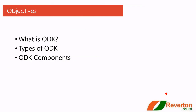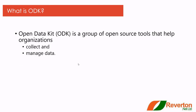In this presentation, I will give you a brief introduction about three topics: what is ODK, types of ODK, and ODK components. Let's move to the next slide. What is ODK? ODK, Open Data Kit, is a group of open source tools that help organizations to collect and manage data.